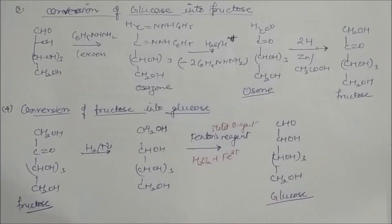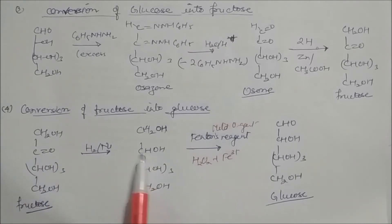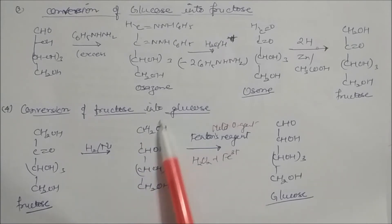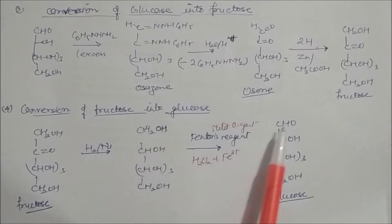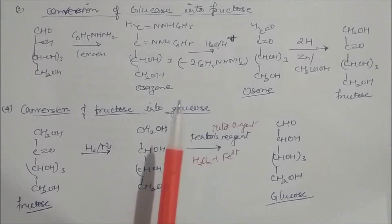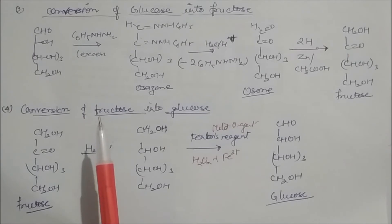In this way we can convert glucose to fructose using phenylhydrazine followed by reduction with zinc and acetic acid. For the reverse — converting fructose to glucose — fructose is first reduced to give the sugar alcohol. Then Fenton's reagent, a mild oxidizing agent, attacks the primary carbon on either end of the chain, converting it to an aldehyde and giving glucose.